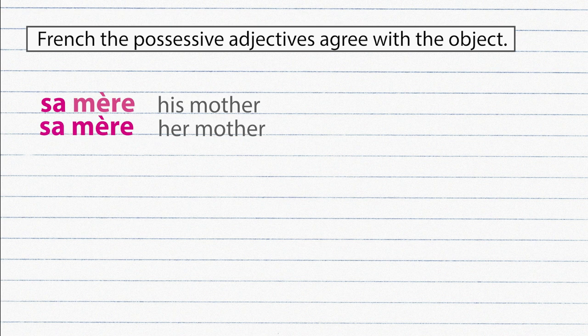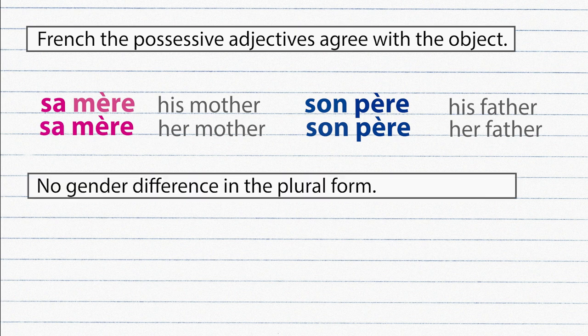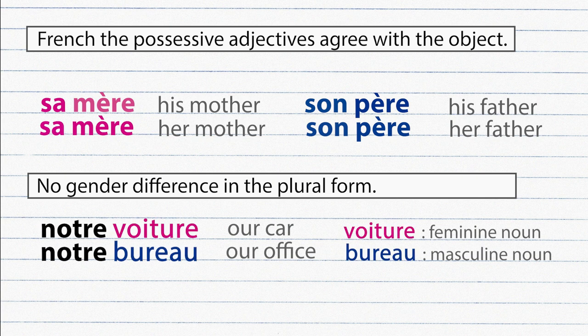Another example. Son père, son père. In the plural form, there are no gender differences. Notre voiture, notre bureau.